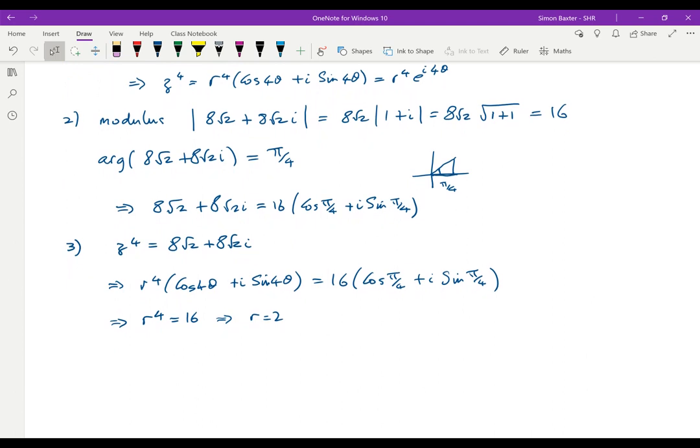If we now look at the argument of both sides, we also get that 4θ has to be equal to π/4. But this argument π/4 is only by choice. There's π/4, we could easily measure the argument as π/4 + 2π,